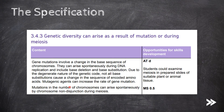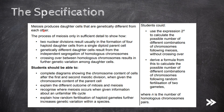Next we'll cover mutagenic agents which can increase the rate of gene mutations, then we'll cover chromosome non-disjunction which can arise spontaneously and result in mutations in the number of chromosomes during meiosis. We'll also cover the process of meiosis and how it produces daughter cells that are genetically different from each other, including independent segregation and crossing over, which are factors that further increase genetic variation among daughter cells.